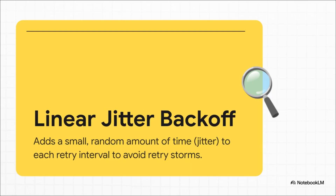That leads us to a much smarter strategy: linear jitter backoff. This is brilliant. It takes the same idea of waiting longer, but it adds a tiny, random amount of time — what we call jitter — to each wait. This little bit of randomness is enough to stagger the retries, so instead of everyone knocking on the door at the exact same second, they all arrive at slightly different times. It's a beautifully simple fix that prevents those retry storms.